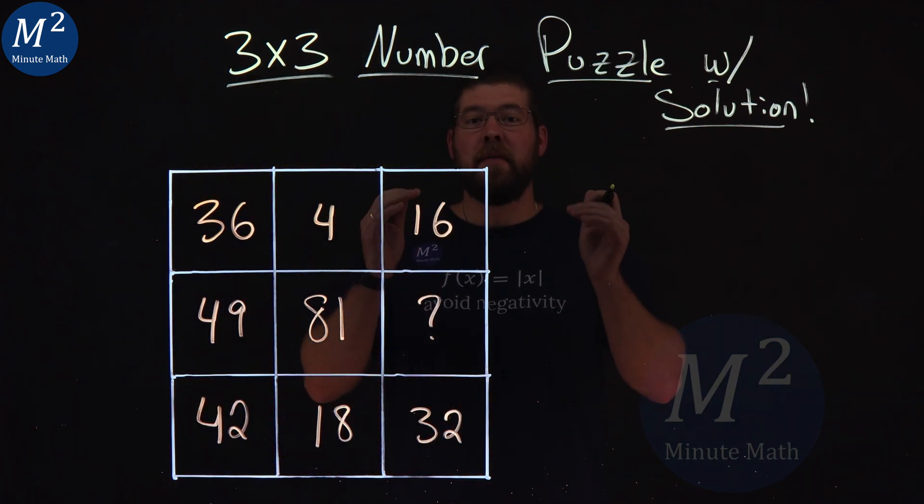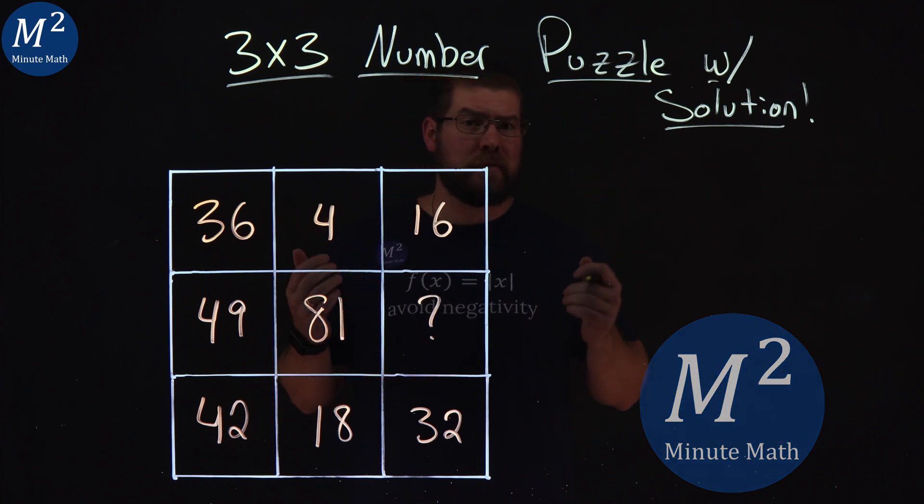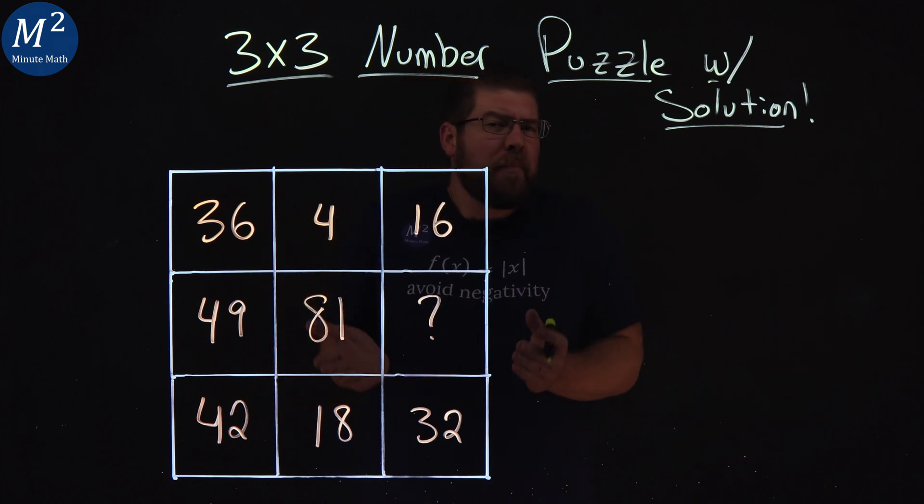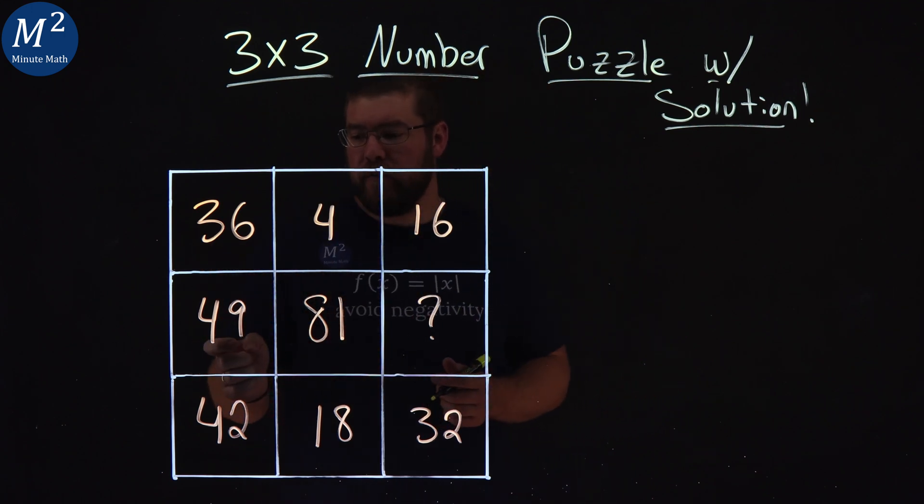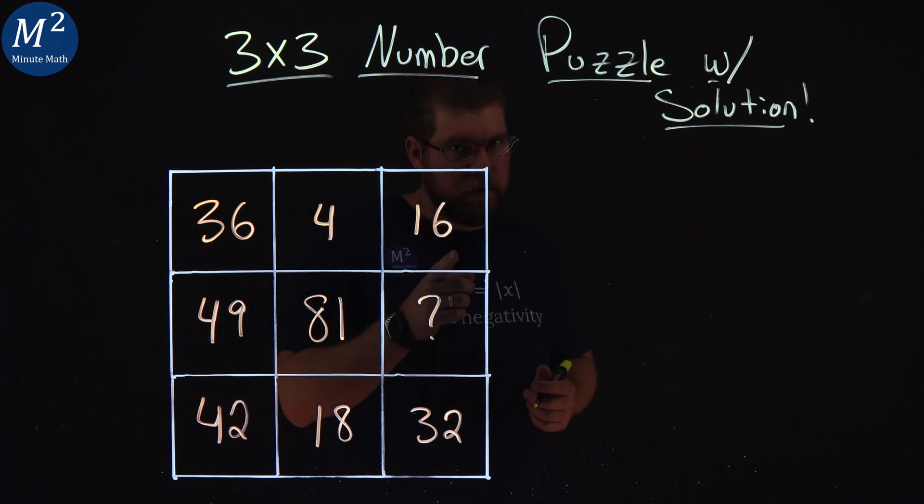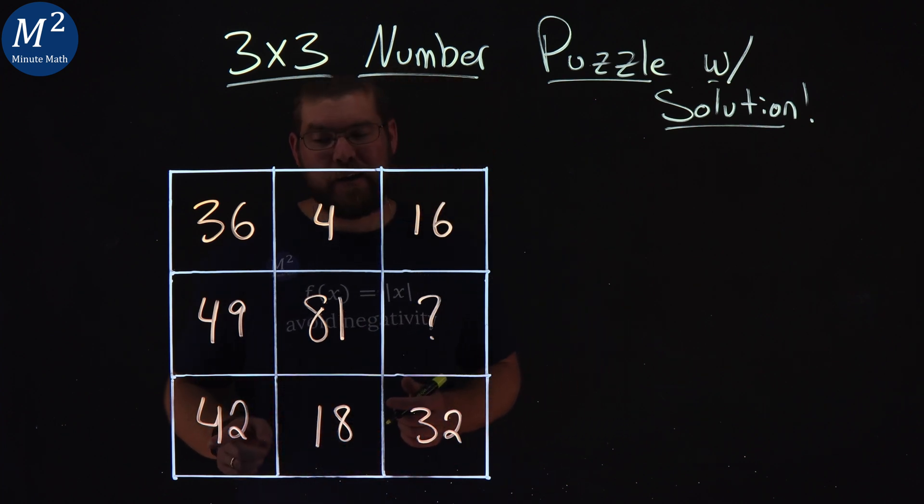Hi, I'm Sean Gannon and this is Minute Math and we have the 3x3 number puzzle with solution here. Our puzzle is this: 36, 4, 16, 49, 81 blank, we don't know what that is, 42, 18, and 32 and that 4 is kind of wacky.